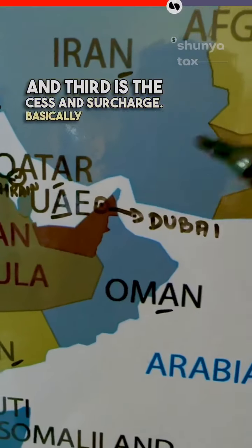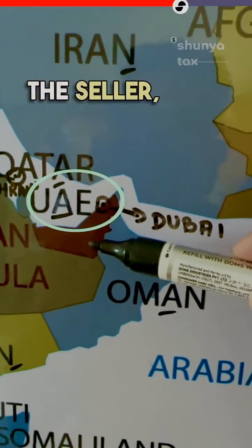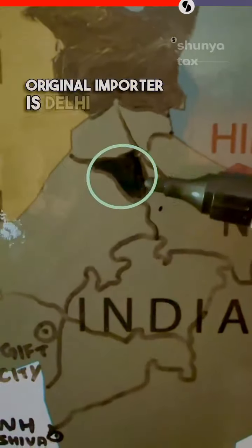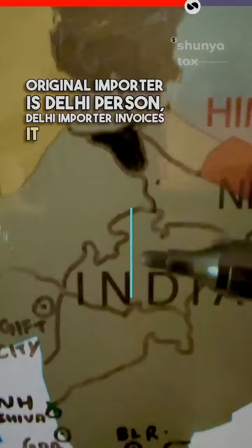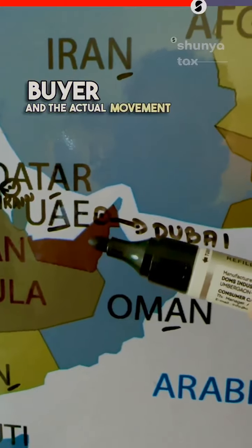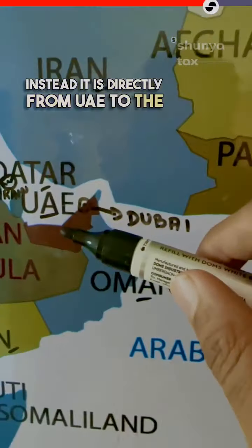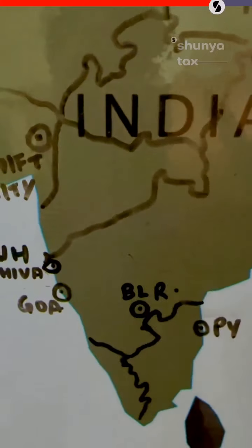Basically the invoicing goes like this: United Arab Emirates is the seller, the original importer is the Delhi person, the Delhi importer invoices it to the Bangalore buyer, and the actual movement of goods is not via the Delhi person — instead it is directly from United Arab Emirates to the Bangalore buyer.